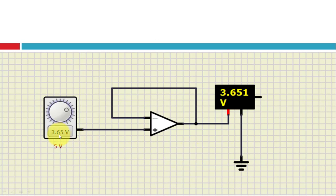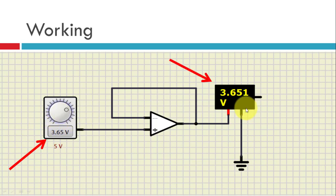Whatever input as we can see, the input is given as 3.65 suppose. So we are getting the same output. So this circuit is called as the voltage follower because whatever input we are giving, the input is 3.65, the output is also 3.65. So whatever input voltage we are giving, we are getting the output voltage as long as the op-amp is not going into saturation.